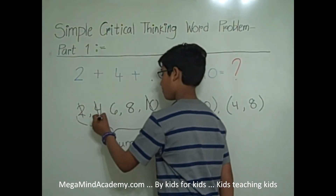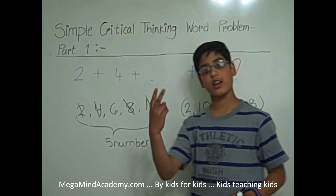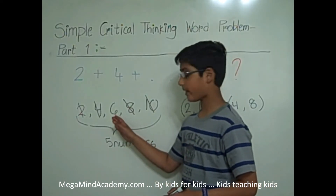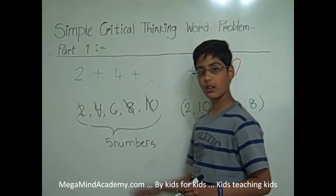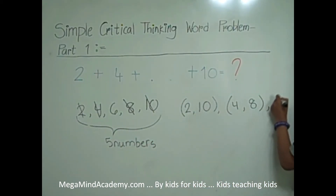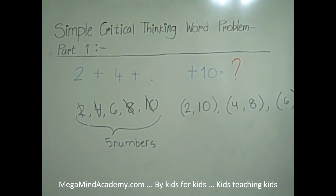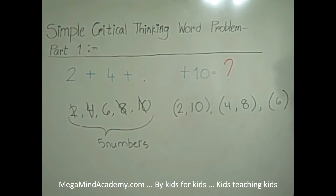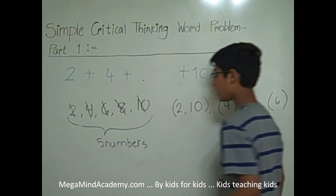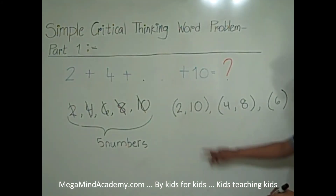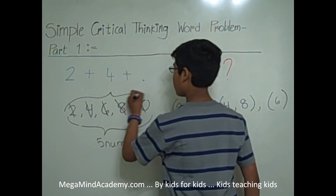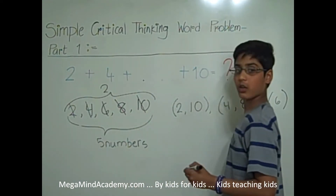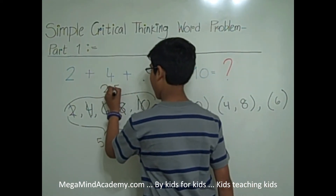Now let's cross those out. We do not have 2 more numbers to make a pair — we only have 6, so 6 will be a half pair. Let's write that down. We have 6 as our half pair. Let's cross that out. Now let's count how many pairs we have. We have 1 pair, 2 pairs, and a half pair — that is 2 and a half pairs, which is also 2.5 pairs.